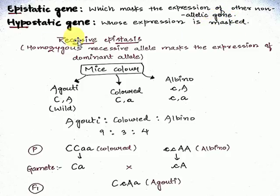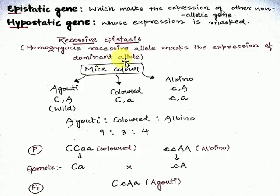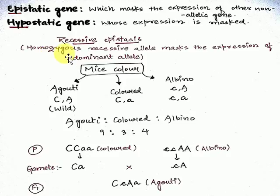This video is all about recessive epistasis, and you will find the same kind of cross for supplementary genes too — so don't get confused between them. In recessive epistasis, the homozygous recessive allele masks the expression of the dominant allele. The simple trick: the epistatic gene hides the other's expression, and in recessive epistasis that gene is recessive in nature and hides the dominant gene's expression.